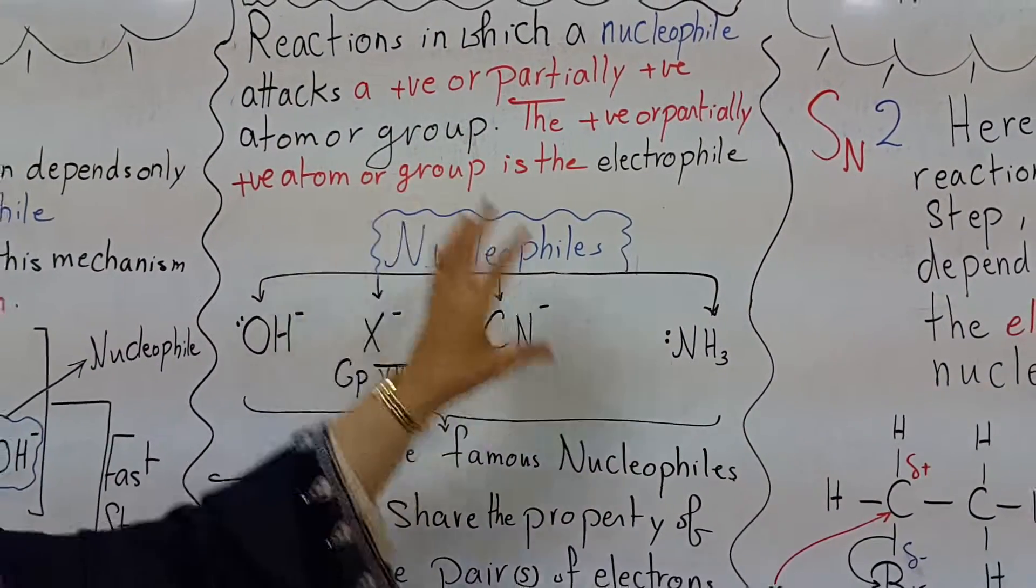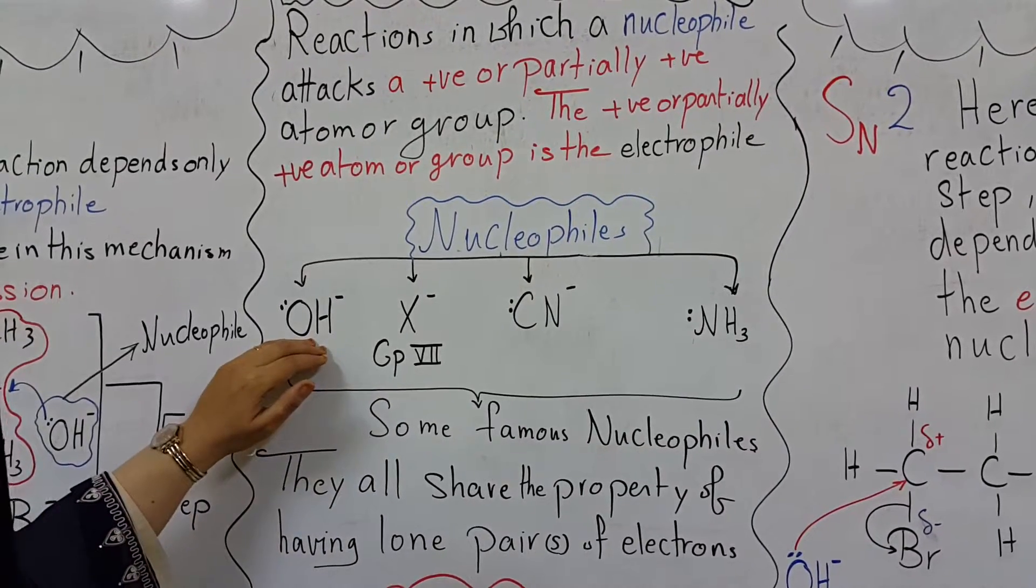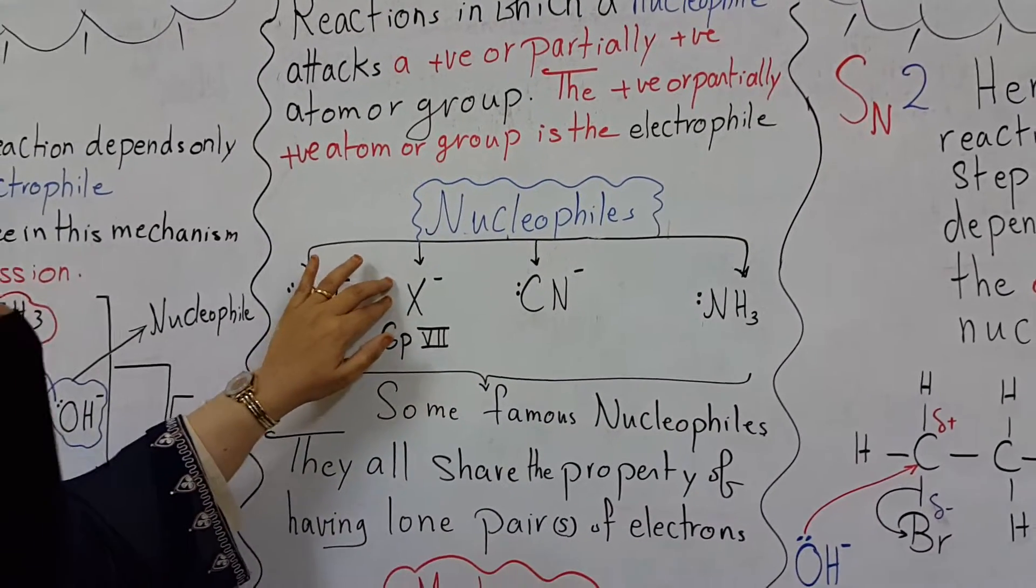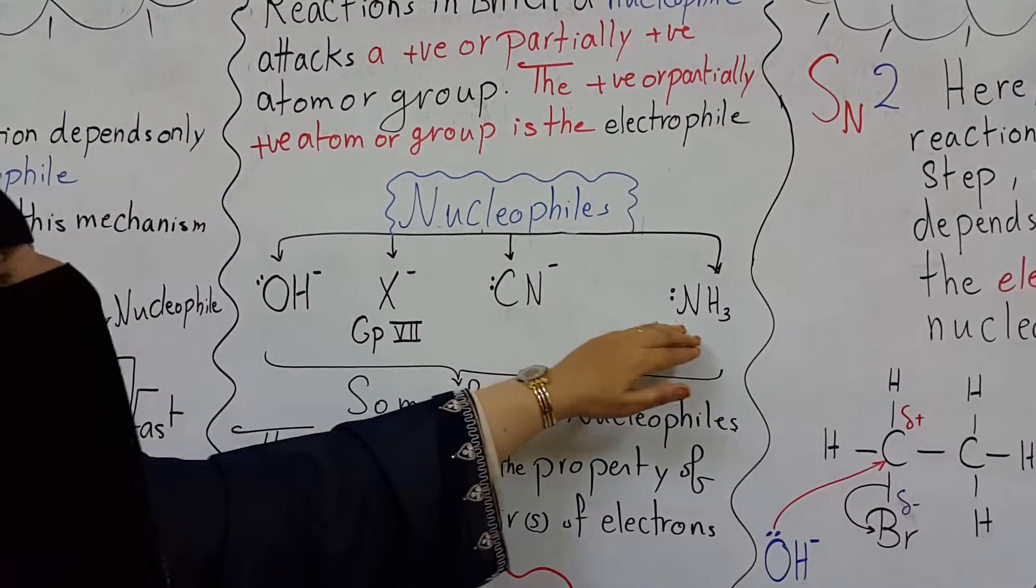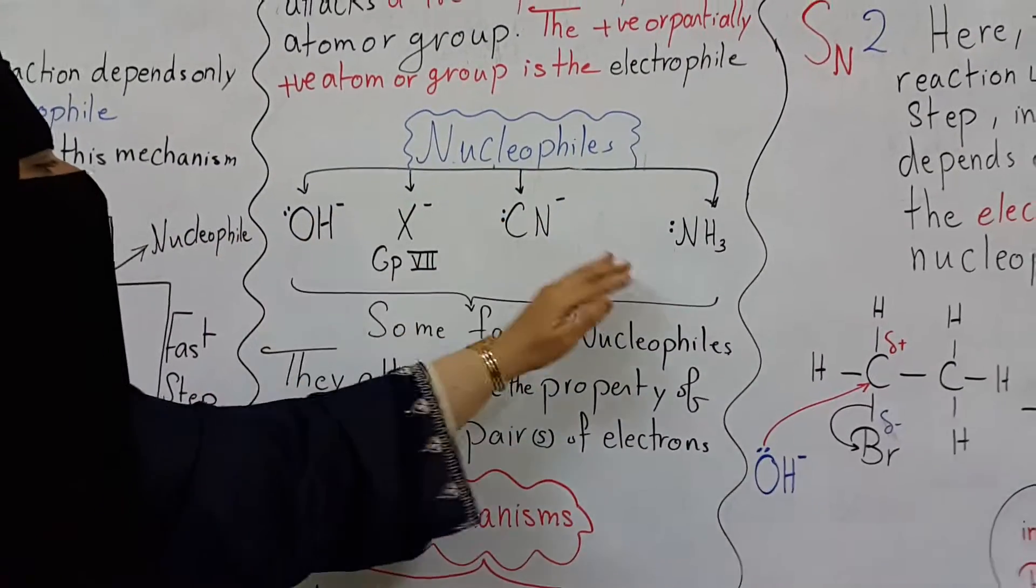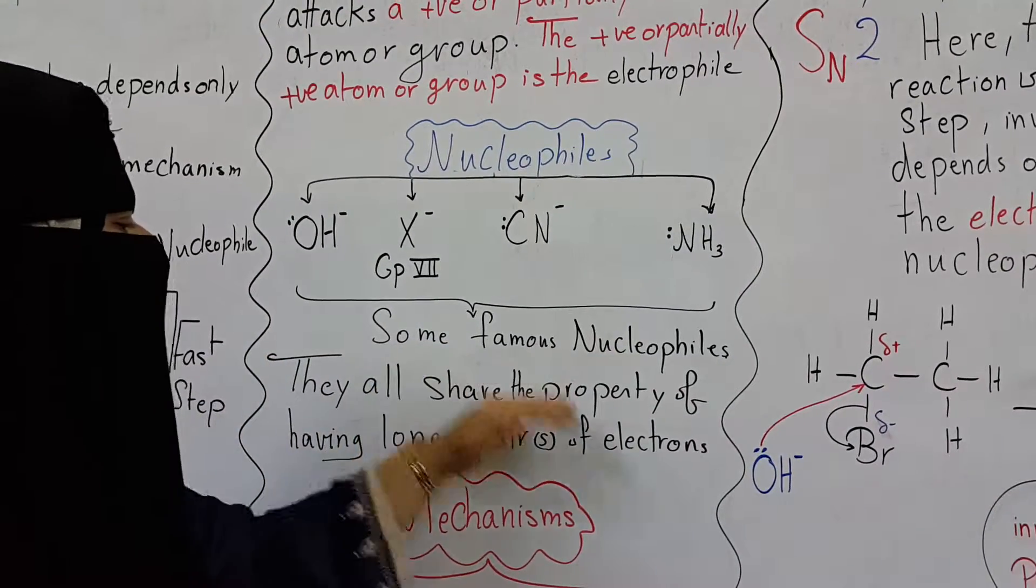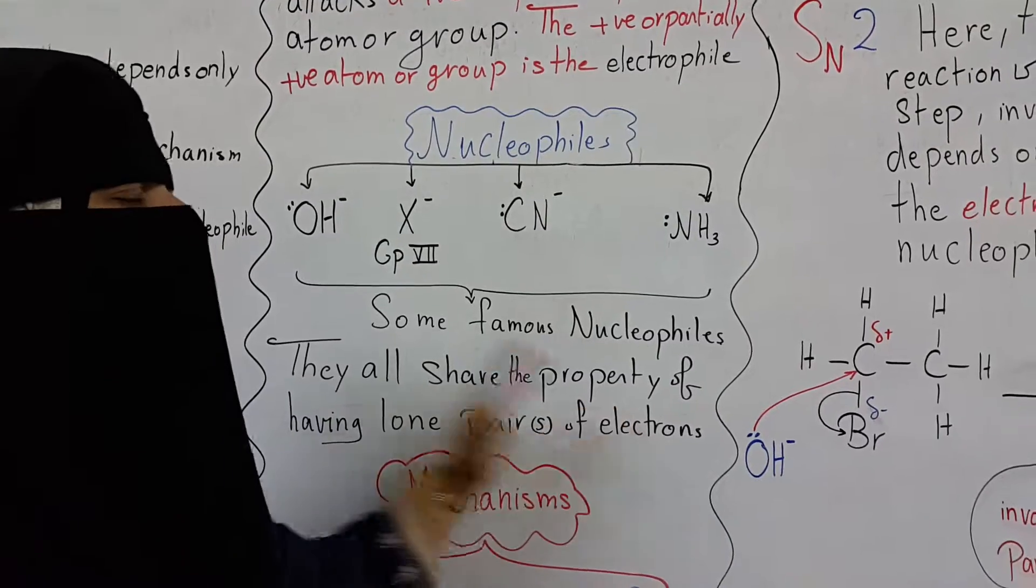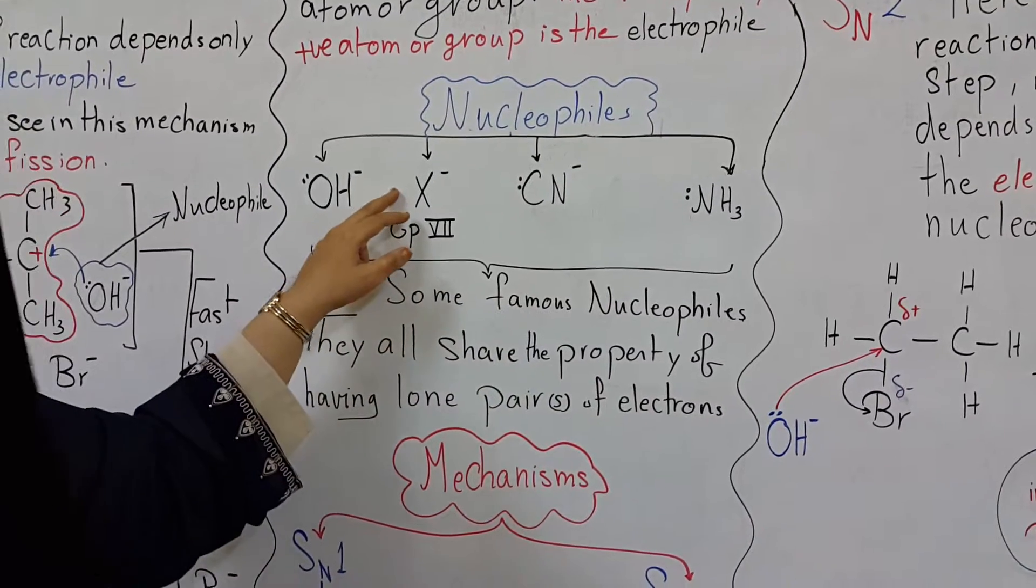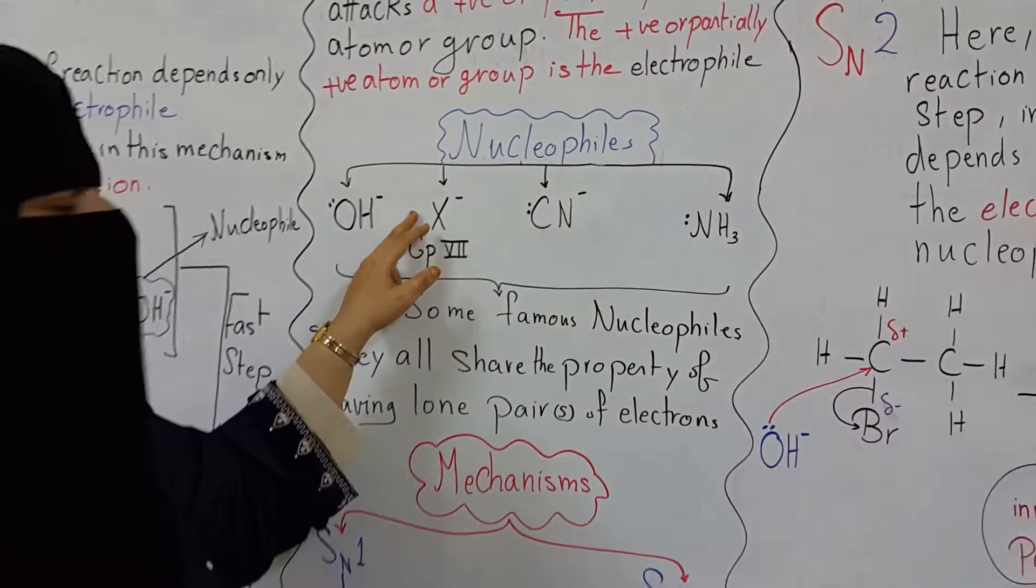Famous nucleophiles in these reactions include hydroxyl ion, halide ions, cyanide ion, and ammonia molecules. These nucleophiles share one property: having lone pairs of electrons. Halide ions have three lone pairs of electrons.